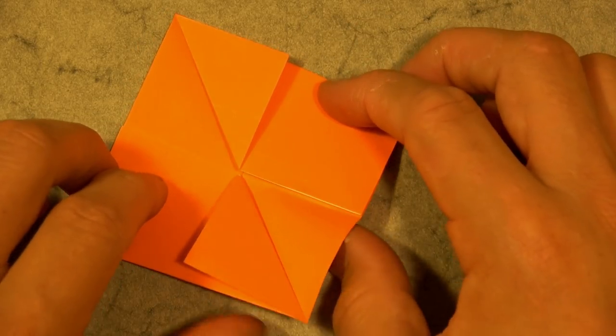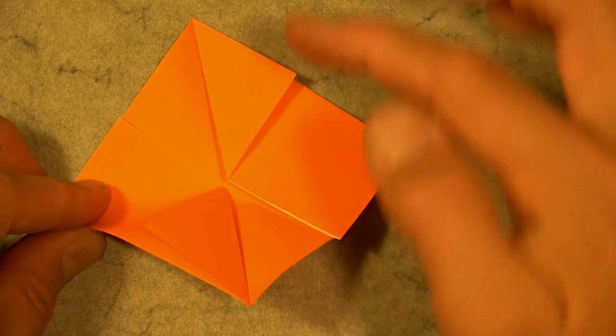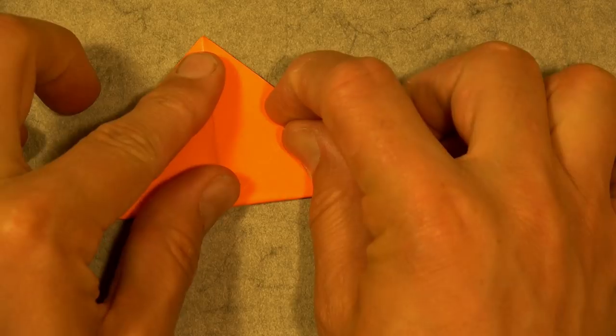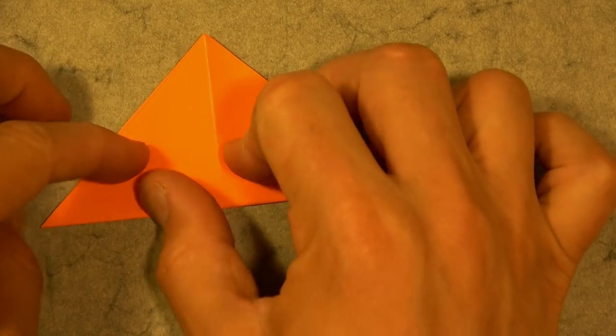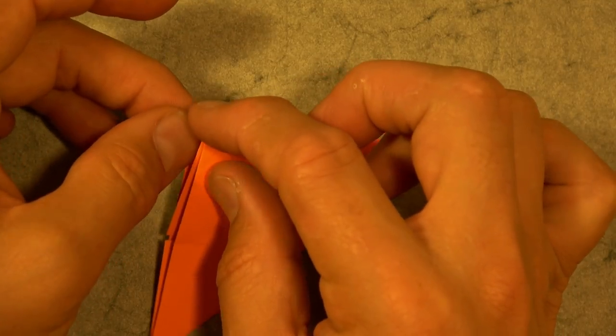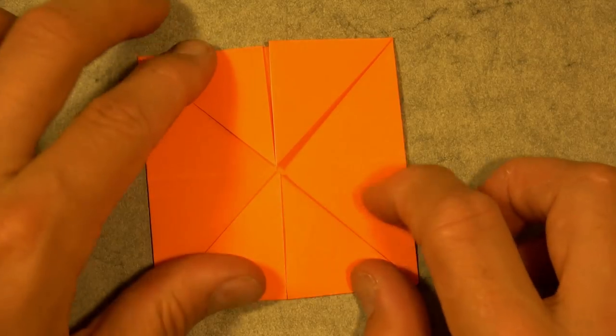Now fold the square in half diagonally in this direction. So this corner goes to this corner. And once again we're going to unfold in a particular manner. Hold here and here, separate.